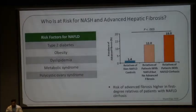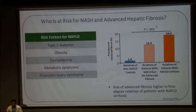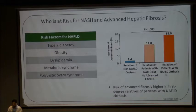These are the risk factors which have been shown for NAFLD: diabetes, obesity, dyslipidemia, metabolic syndrome, and polycystic ovarian disease. This basically shows that relatives of patients with NAFLD without advanced fibrosis or NAFLD cirrhosis have a higher prevalence of advanced fibrosis.